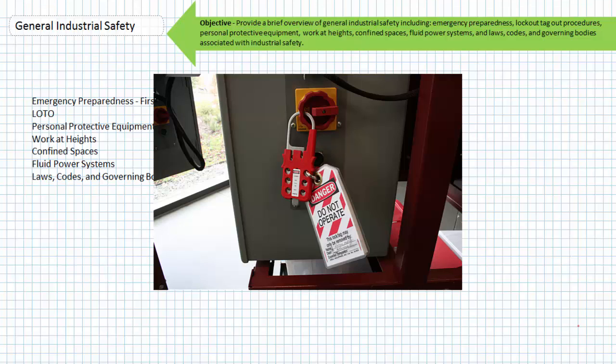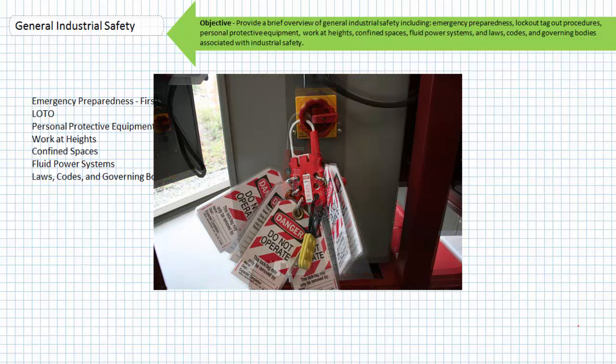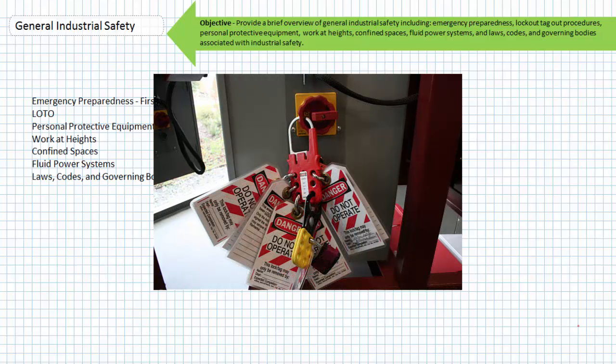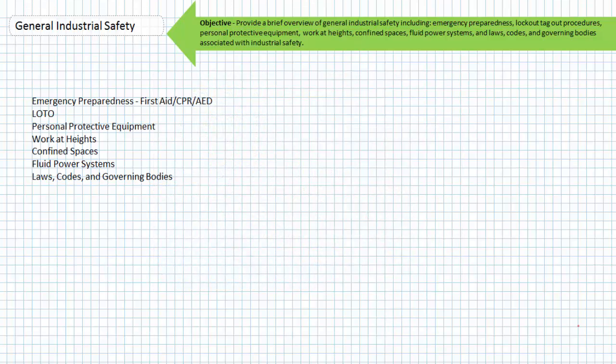Teams of workers will use the locking mechanism and a hasp with individual padlocks. Each worker has their own padlock and their own key. Achieving a state of zero energy means that there is no source of hazardous energy present, nor can any build up during the course of a maintenance procedure.